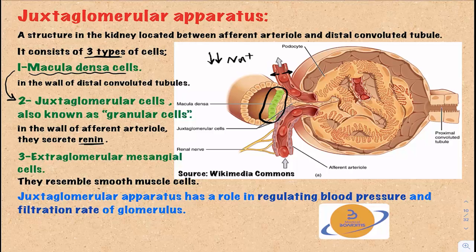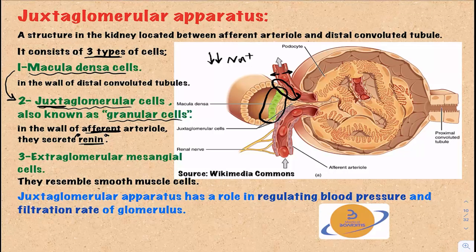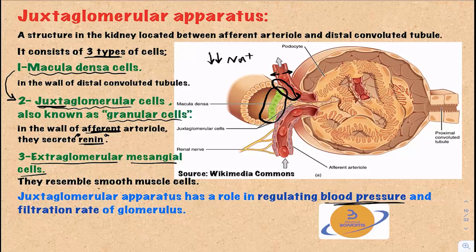The second type of cells is the juxtaglomerular cells, also called granular cells, located in the wall of the afferent arteriole — these are the cells that secrete renin. The third type is extraglomerular mesangial cells, which have some contractile properties though their function is not fully understood. In general, the juxtaglomerular apparatus plays a role in regulating blood pressure and controlling the filtration rate of the glomerulus.